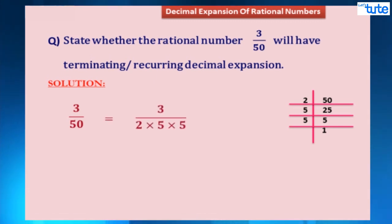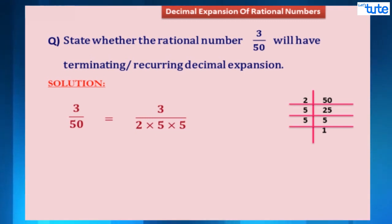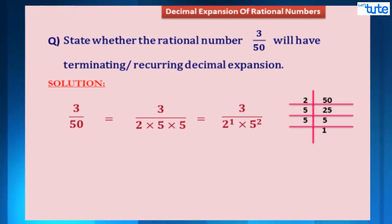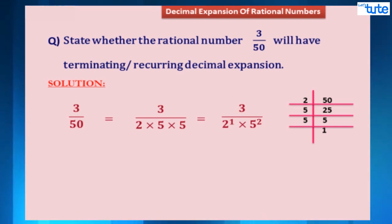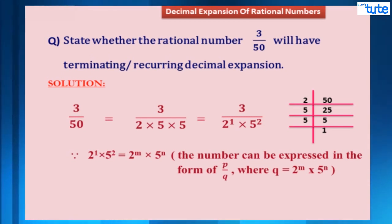That means we can write the fraction 3 upon 50 as 3 upon 2 into 5 into 5. You can see that 2 appears 1 time and 5 appears 2 times. Therefore, we can further write this as 3 upon 2 raised to 1 into 5 raised to 2.